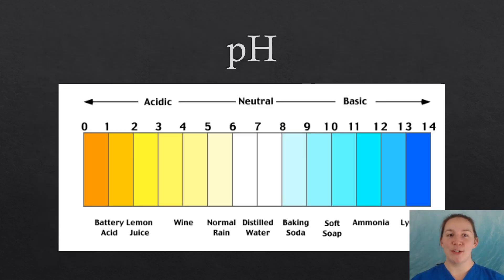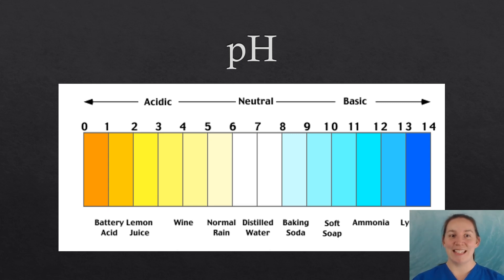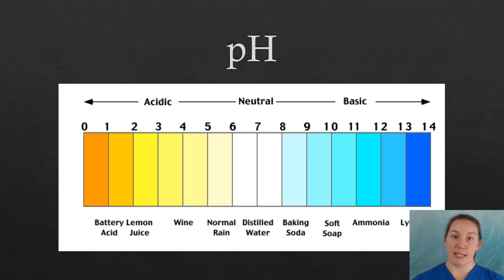pH measures the hydrogen ion concentration in a solution. It is given as a numerical value on an inverse log scale. This means that solutions with more hydrogen ions have a lower pH.